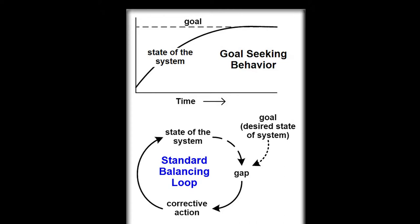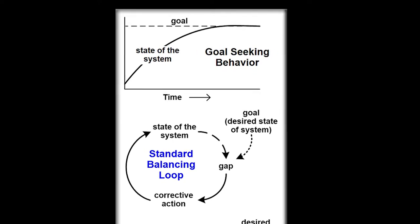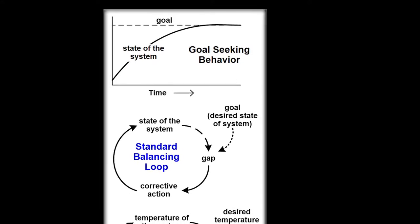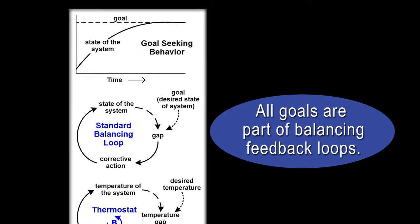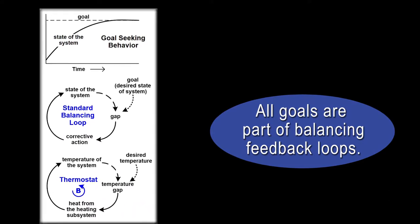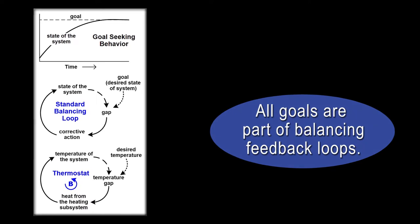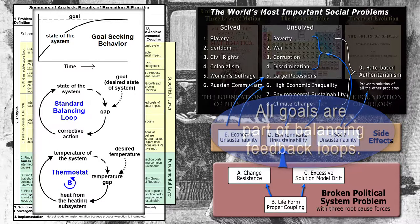"A goal should scare you a little and excite you a lot." — Joe Vitale. Goals control systems. A key principle in systems thinking is that all goals are part of balancing feedback loops. So if we need to understand why a system is behaving a certain way — such as failing to solve the unsolved problems — we must understand the balancing feedback loops involved and the goals of those loops. The key to solving the entire problem lies in understanding the system's current goal, which can be found in the root cause of subproblem B.